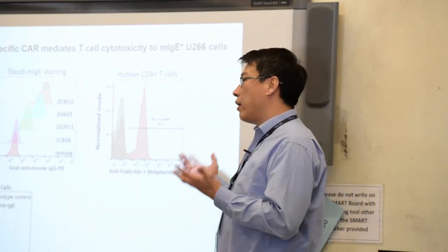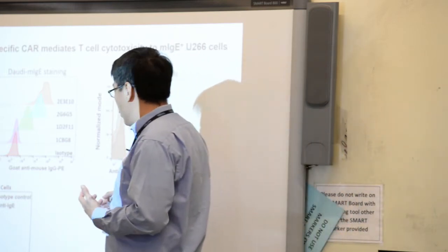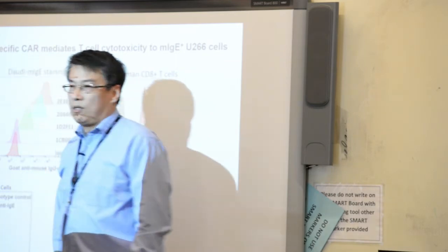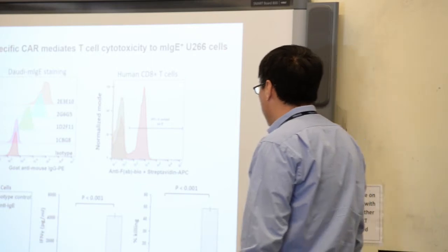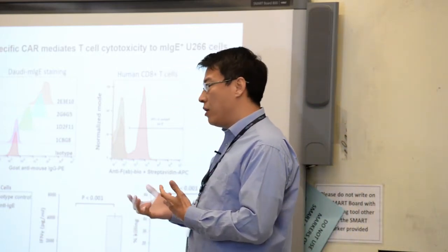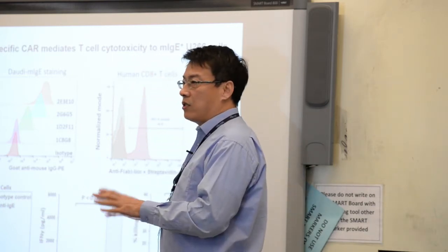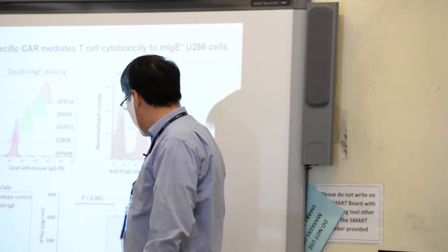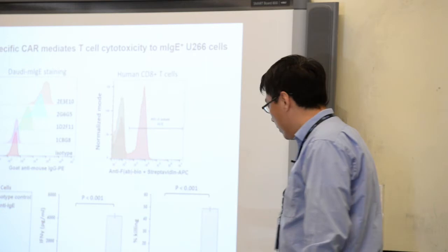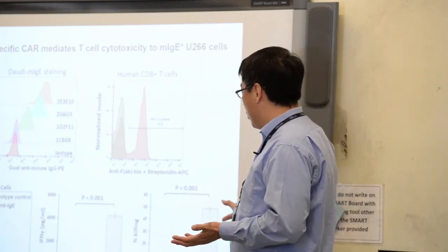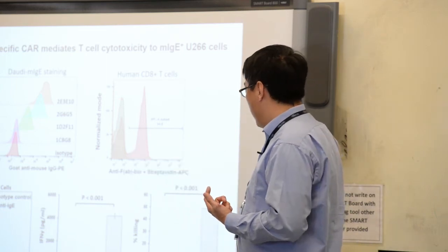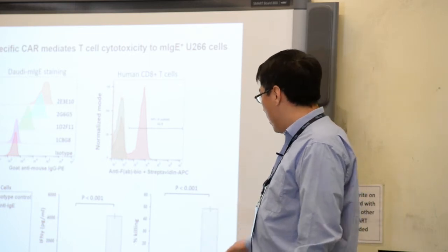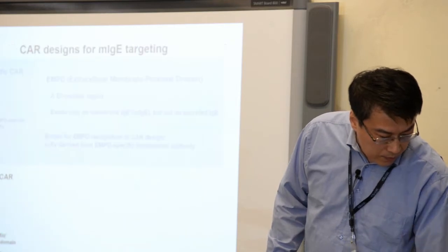Then we want to see whether the CAR can mediate T cell responses to a target cell. Here we use U266 cells, which is a human myeloma cell that expresses a relatively low level of membrane IgE. We first looked at T cell production of interferon gamma, which is a cytokine and a readout for T cell activation. As you can see, the mock transduced T cells without the CAR didn't produce any, but the CAR T cells produce a massive amount. Also we carried out a killing assay to look at whether the T cells can kill the target cell. It's a luciferase-based killing assay. As you can see, the mock transduced not very significant killing, but the CAR T cells killed close to 50% of target cells.